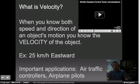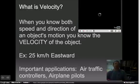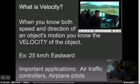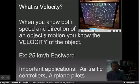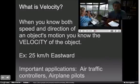Now the second part of this was velocity. And when we're thinking about velocity, you can think about how speed and direction work together in this. So when you know both speed and direction, you know an object's velocity. For example, 25 kilometers per hour, but 25 kilometers per hour east. Okay? Important applications, of course, air traffic controllers, airplane pilots, you don't want those guys running into each other. So those are important to know and understand velocities. Okay?